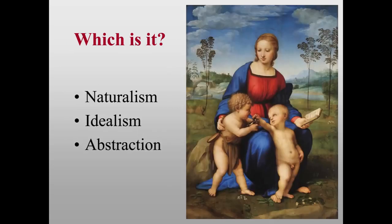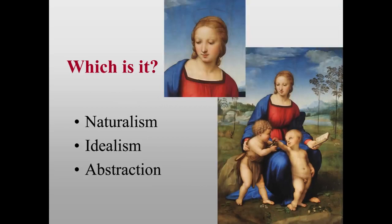Which is it? This is a Madonna and Child with the young John the Baptist by Raphael, who is known for his graceful idealism. The proportions of the figure are absolutely perfect — you can see the ovoid face with features all in balance, smooth skin, a beautiful Madonna. It's a very symmetrical picture, and symmetry often goes with idealism. Not a hundred percent either way, but very frequently you will see that.